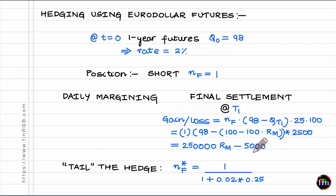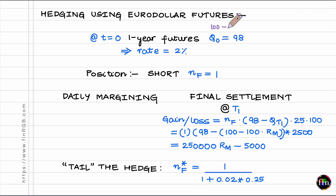Now let's move on to hedging using euro dollar futures. Let me go to the futures market as of today at t equal to 0. Let's say the futures market is also working with the same fair rate of 2% for the period between 1 year from today and 1 year and 3 months from today. If the futures market implies a rate of 2%, then the one-year futures will be quoting at 98 — because the quoting convention is 100 minus the implied futures rate in percentage points. So a quote of 98 implies a rate of 2%.